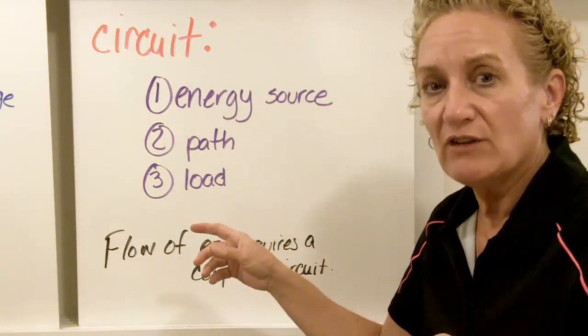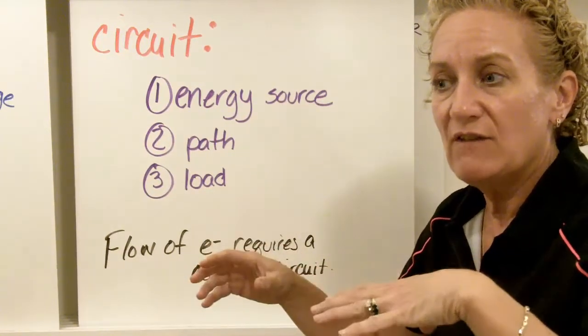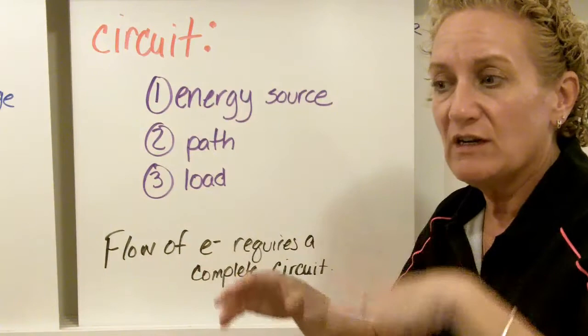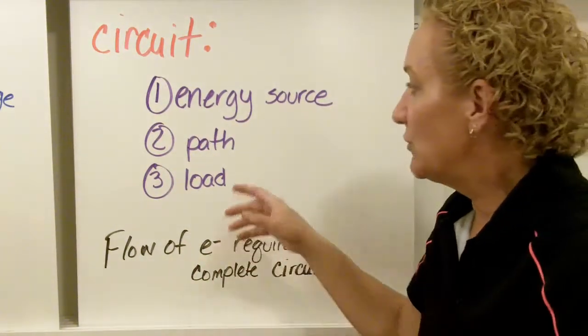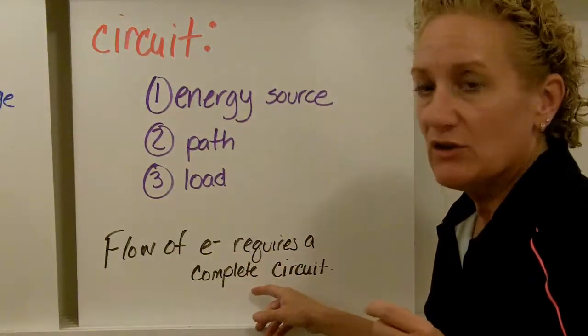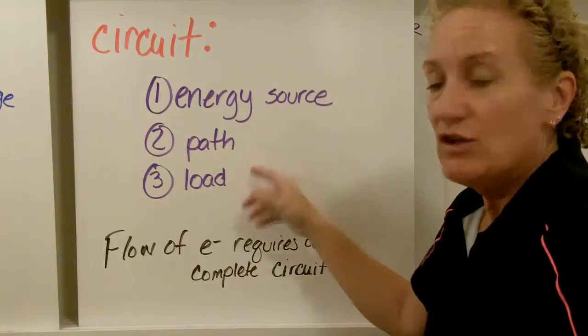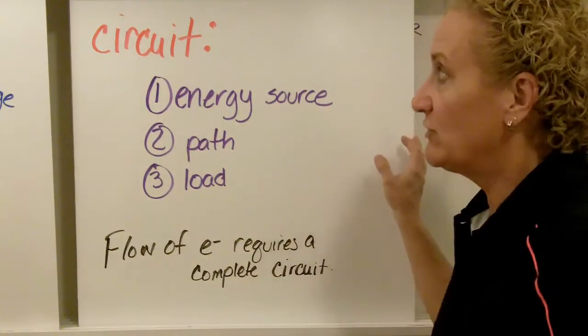Now do you have to have a load to have an electrical circuit? And the answer is yes, because you're only going to have a circuit if electrons flow because of a difference in electric potential. And so you do need to have a load. The flow of electrons requires a complete circuit. So let's say you're missing the path or part of the path, you're not going to have a flow of electrons. You don't have a flow of electrons, you won't have electricity.